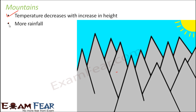Secondly, mountains have more rainfall. There is always a temperature difference between the top of the mountain and the bottom. Near the base the temperature might be higher, while at the top the temperature tends to decrease. Due to this difference in temperature and the low temperature at the tops, mountains remain snow covered, and they also tend to get more rainfall as well.